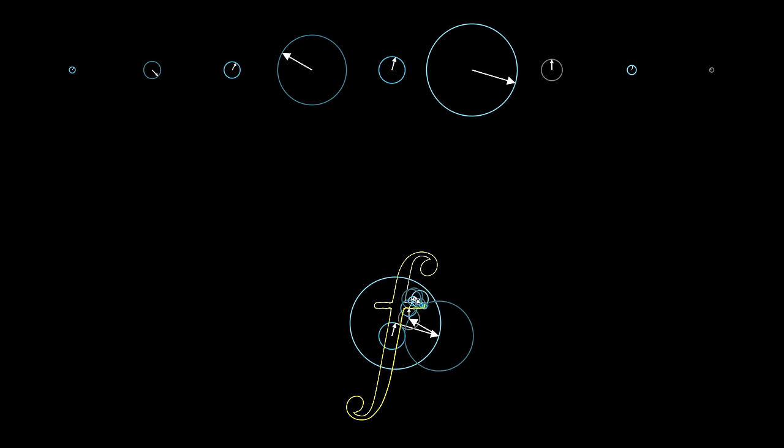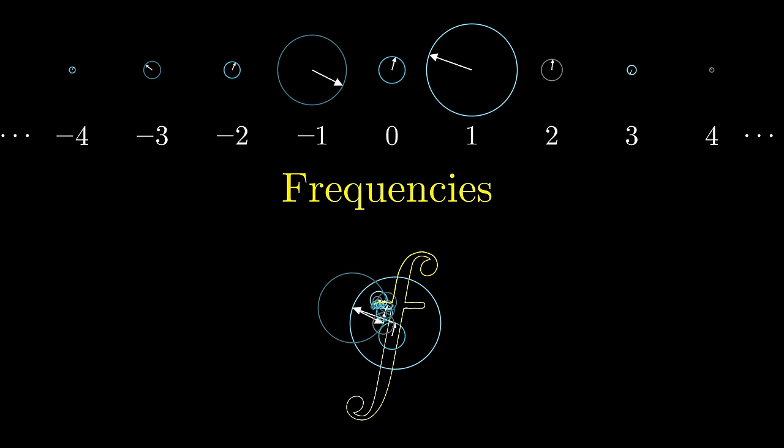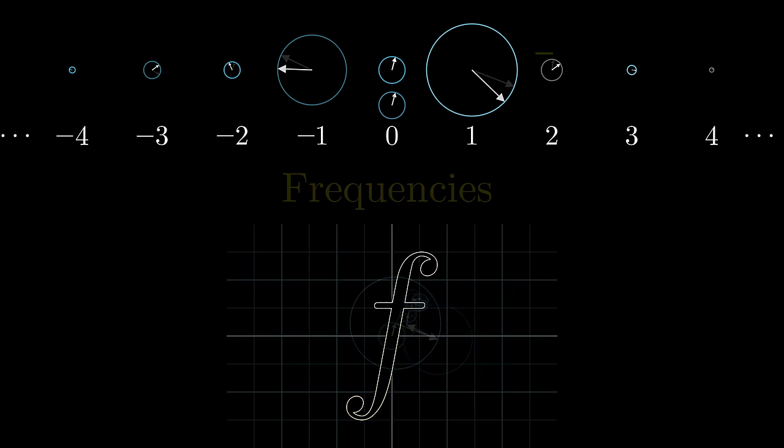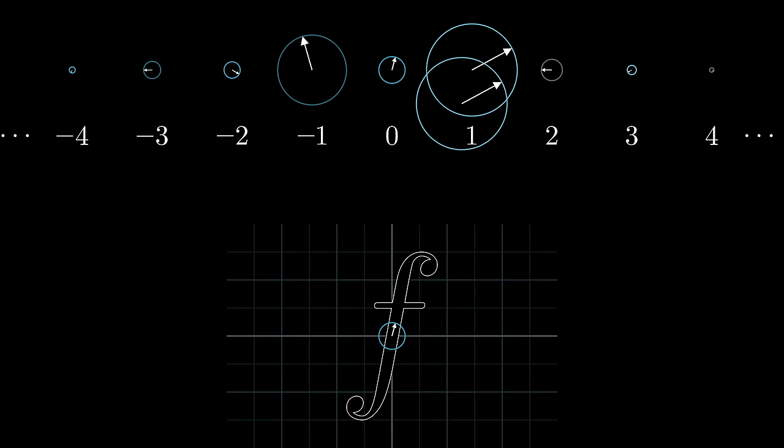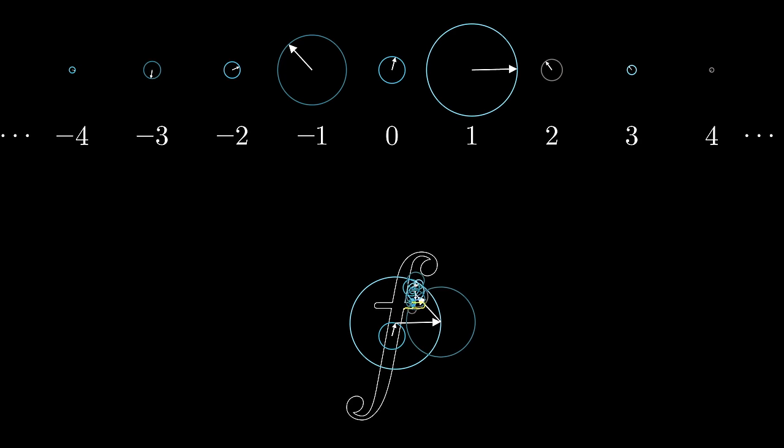This animation you're seeing right now shows how lots of little rotating vectors, each rotating at some constant integer frequency, can trace out an arbitrary shape. To be clear, what's happening is that these vectors are being added together, tip to tail, at each moment. And you might imagine that the last one has some sort of pencil at its tip, tracing a path as it goes.